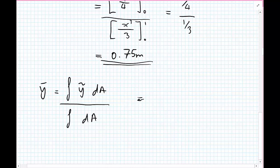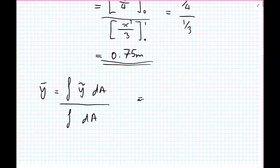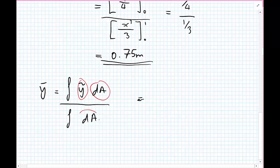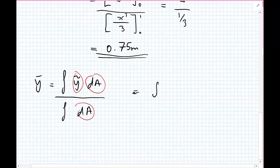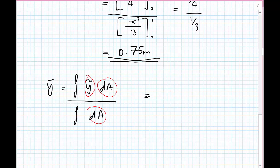Now we need to substitute for what we know about y tilde and what we know about dA. This will get us that we have an integral of y upon 2, which was the y tilde value, and dA was y dx.